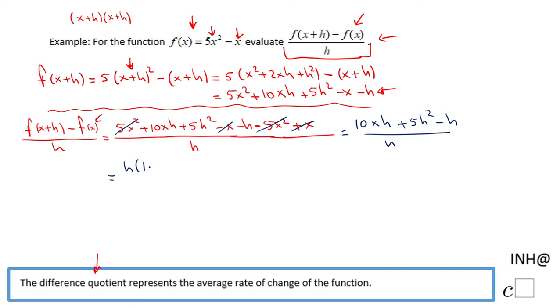So we're going to have h times 10x plus 5h minus 1 over h. And the last thing we can do is simplify these two h's. So the final answer for our problem will be 10x plus 5h minus 1. This is what f of x plus h minus f of x over h is.